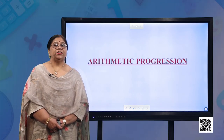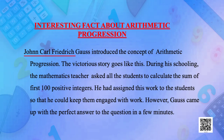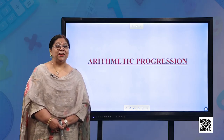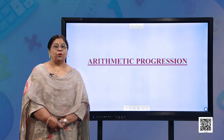John Karl Frederick Gauss introduced the concept of arithmetic progression. The story goes like this: during his schooling, the mathematics teacher asked all the students to calculate the sum of the first hundred positive integers. He assigned this work to keep the students engaged. However, Gauss came up with the perfect answer in just a few minutes.